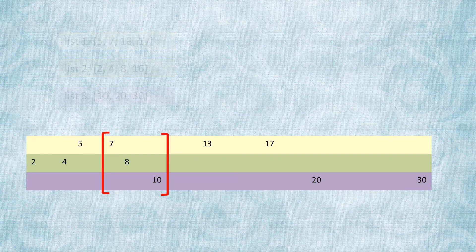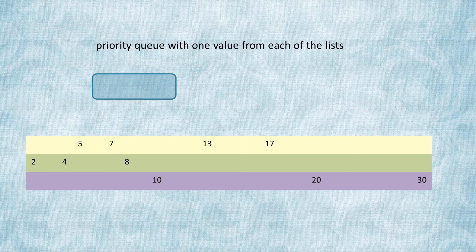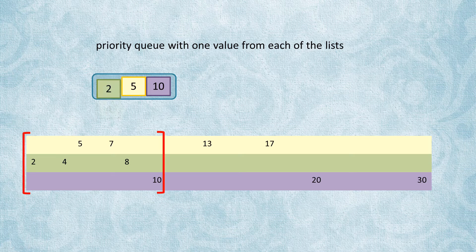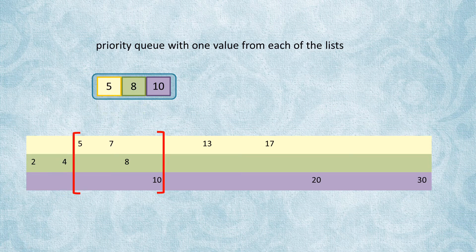A particularly graceful solution to this problem is to use a priority queue that stores just one value from each list. Then, when taking a value out from the queue, you put in the next value from the same list. So if you have k lists, there will be at most k numbers in the queue at any given time.